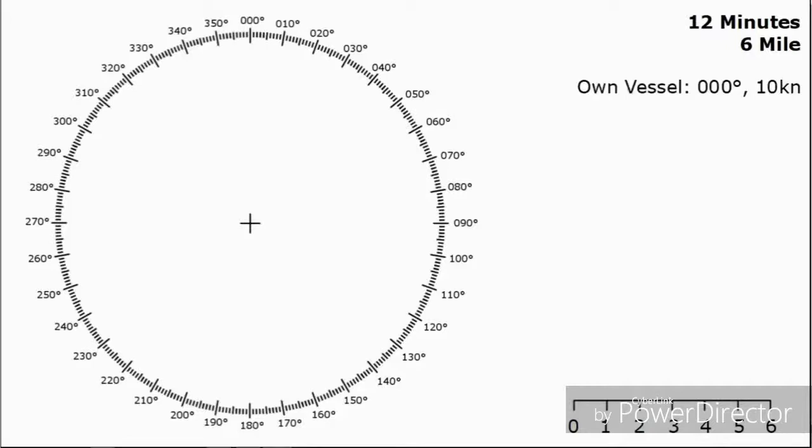With that we can input our own data. Our own vessel is going to be heading due north 000 degrees at 10 knots. I've chosen these just to make the numbers easier.